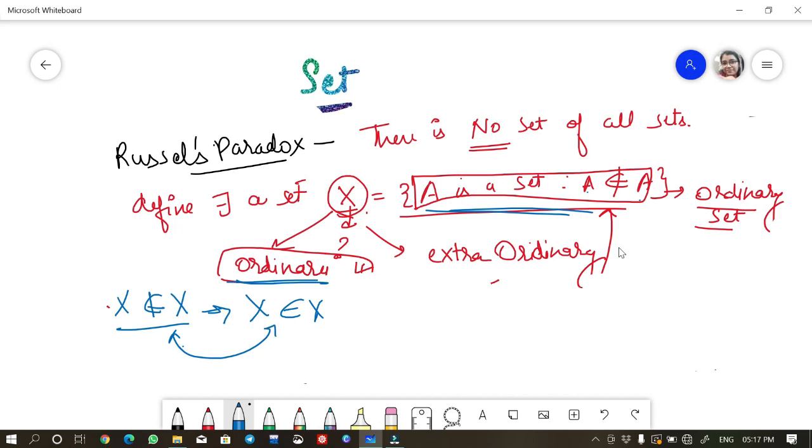You took one set X to be ordinary, but you get it to be extraordinary. Hence contradiction.